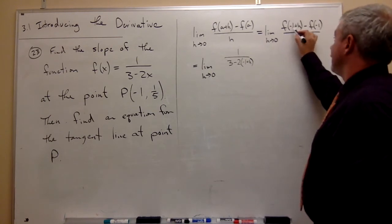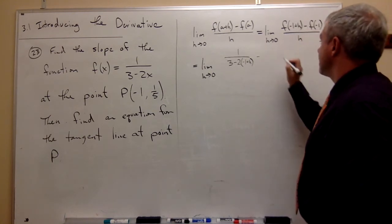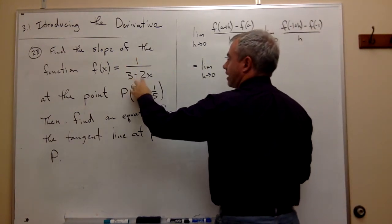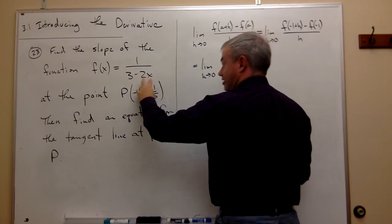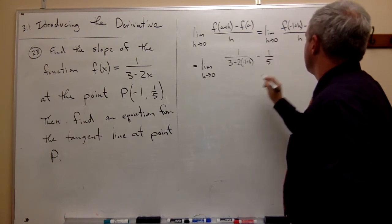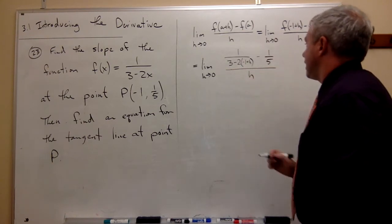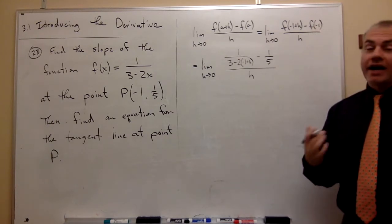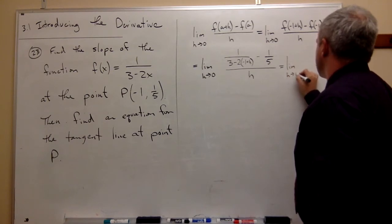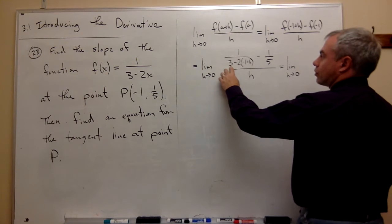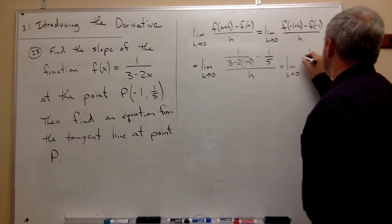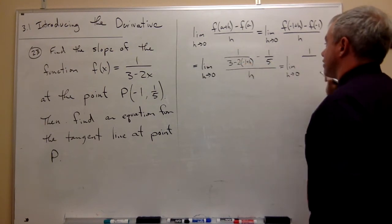So that's f of negative 1 plus h. For f of minus 1, if I plug in minus 1, I get 1 over 3 minus 2 times minus 1, which is plus 2, so 1 fifth. So we have minus 1 fifth all over h. Distributing, this gives us 1 over 5 minus 2h.